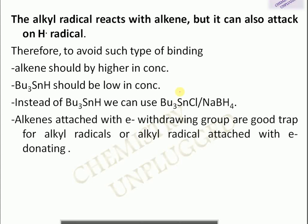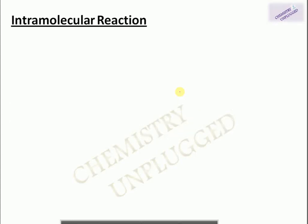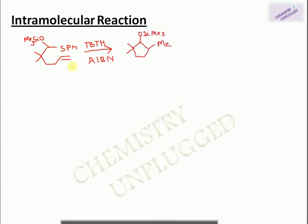Alkenes bearing electron-withdrawing groups are good radical traps for alkyl radicals bearing electron-donating groups, and vice versa. Next is the intramolecular reaction: when a molecule contains both a halide and an alkene, treating with TBTH and AIBN causes ring formation. For example, a molecule with an SPh group can also react, since TBTH can break the C–S bond.